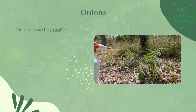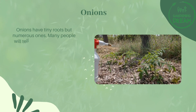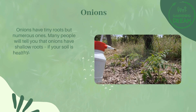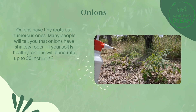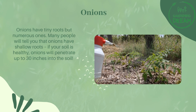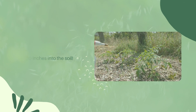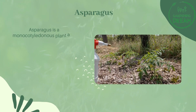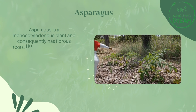Plants with fibrous roots — onions: onions have tiny but numerous roots. Many people will tell you that onions have shallow roots, but if your soil is healthy, onions will penetrate up to 30 inches into the soil.